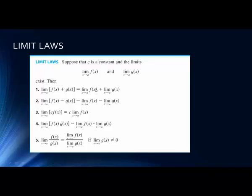In the last class, we looked at some of the rules around limits, or the limit laws. We're saying that there are two functions — the limit as x goes to a of f(x) and the limit as x goes to a of g(x) — both exist. The limit of a sum equals the sum of the limits, so we can take the limit of each part and add them. The limit of a difference is equal to the difference of the limits. If we're taking the limit of a constant times a function, this equals the constant times the limit.